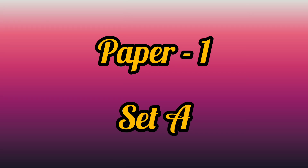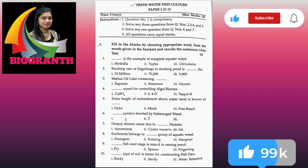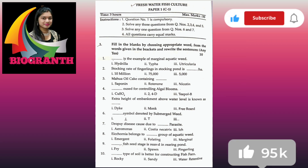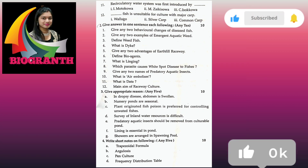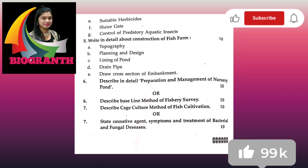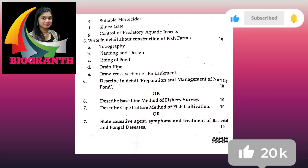Your paper comprises of 50 marks — paper 1 and paper 2 are different. So paper 1 will initially be comprising of the first question, that is MCQs. Then the second question will be give answers of 1 mark, then appropriate reason, short notes, and then you will be having long questions.